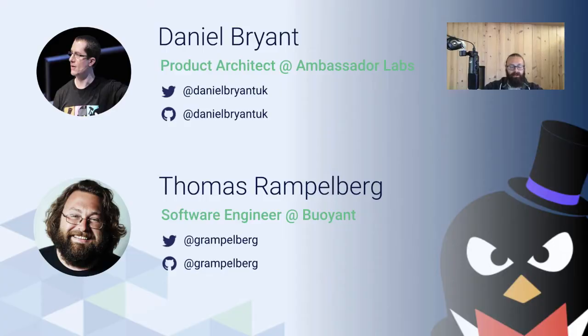Before we get started, let me introduce my co-presenter, Daniel Bryant. Daniel, why don't you tell us a little bit about yourself? Thanks, Thomas. Hello, everyone. I'm Daniel Bryant, Product Architect at Ambassador Labs. I've been working on the Ambassador API Gateway project for the past three or so years. Loving this technology, loving Linkerd, loving service mesh in general. The combination of Ambassador and Linkerd for multicluster is super interesting, so looking forward to bringing you the demo today.